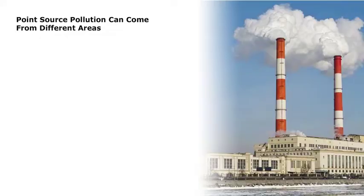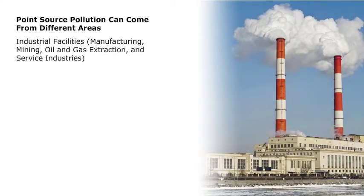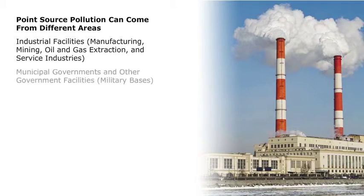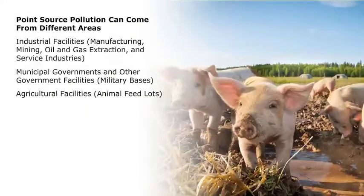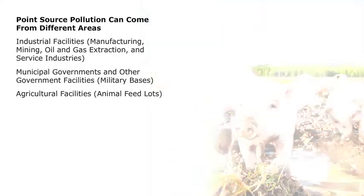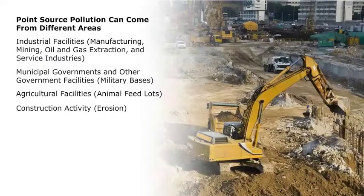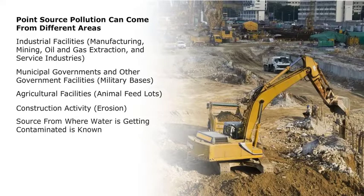Point source pollution can come from four different areas: industrial facilities, which can include manufacturing, mining, oil and gas extraction, and service industries; municipal governments and other government facilities such as military bases; agricultural facilities such as animal feedlots; and construction activity, particularly when talking about erosion.